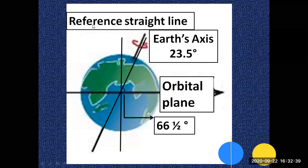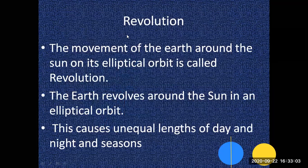The reference straight line and the Earth's axis form 23.5 degrees, and the orbital plane and the Earth's tilted axis form 66.5 degrees. The next topic is Revolution. What is Revolution? The movement of the Earth around the sun on its elliptical orbit is called Revolution.